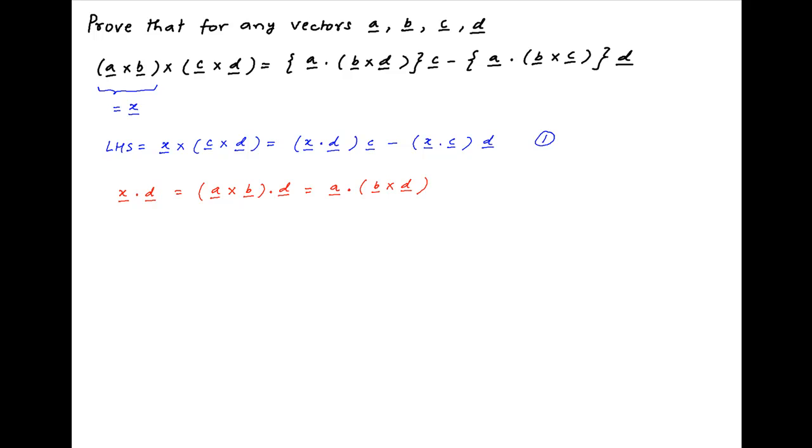Similarly the scalar dot product x dot c is equal to a cross b dot c, which is equal to the scalar triple product a dot b cross c.